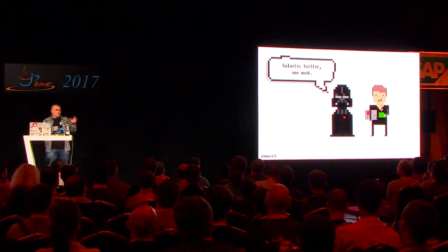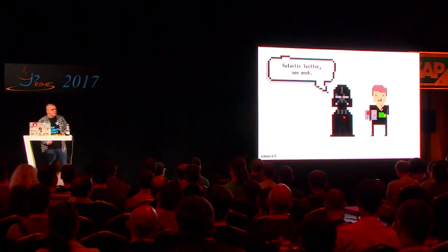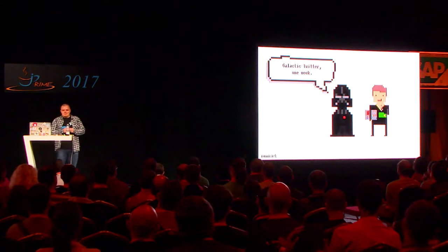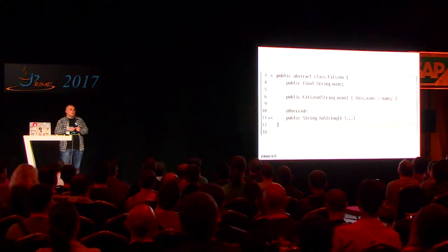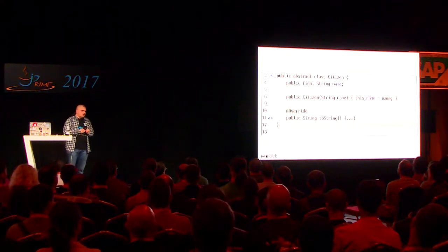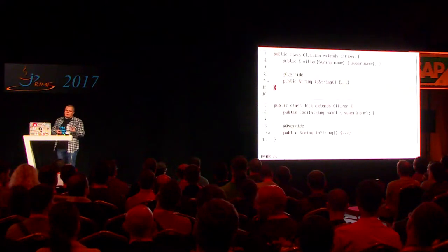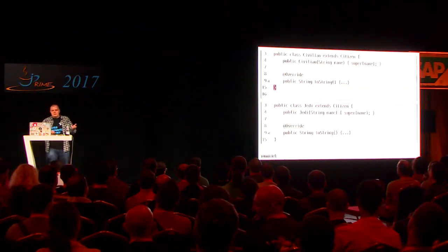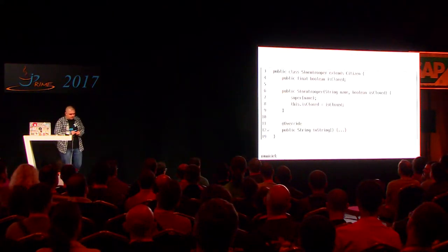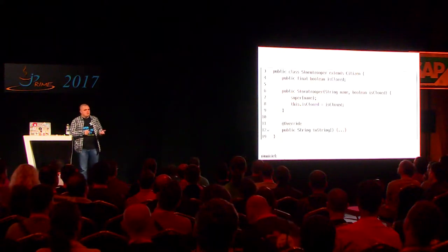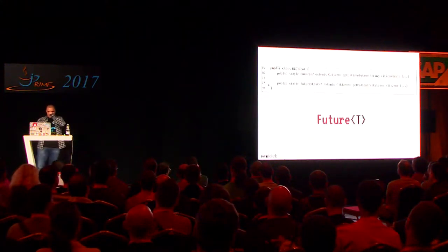So let me show you how all those things can be utilized in our project. We were tasked with creating a Twitter version with followers functionality for the Galaxy far, far away. The first thing we need to do is model our domain. Our domain for followers will be citizens of the Galaxy — an abstract class with just a name. We have concrete subtypes: Civilian, Jedi, Rebel, Sith with just names, and Stormtrooper which additionally has a boolean flag indicating whether it's a clone.